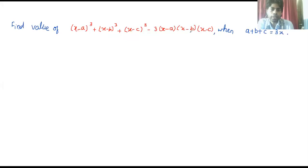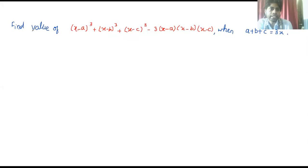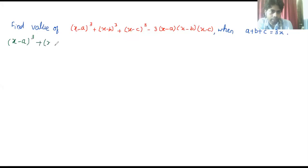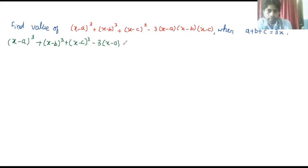The given condition is a plus b plus c equals 3x. Let us solve this problem using our identities. The expression is (x minus a)³ plus (x minus b)³ plus (x minus c)³ minus 3(x minus a)(x minus b)(x minus c).